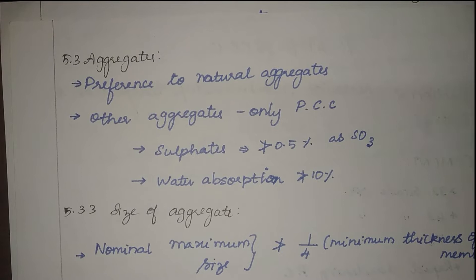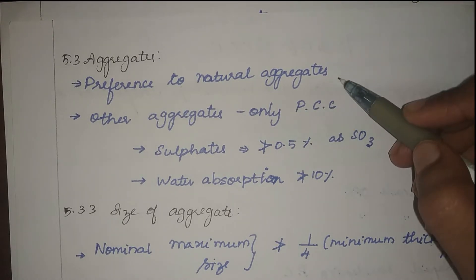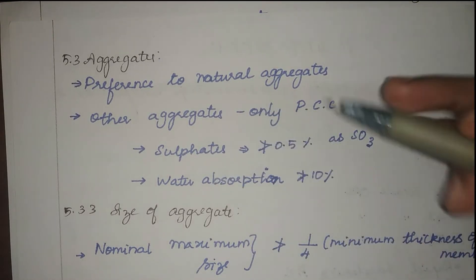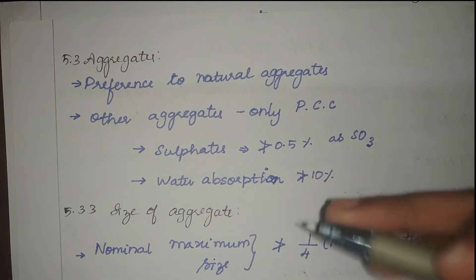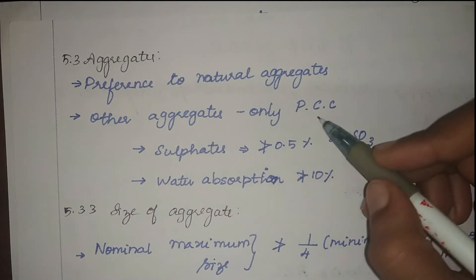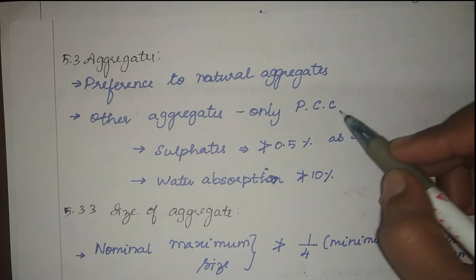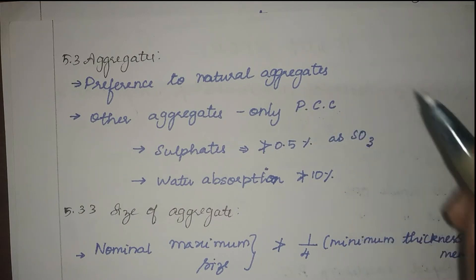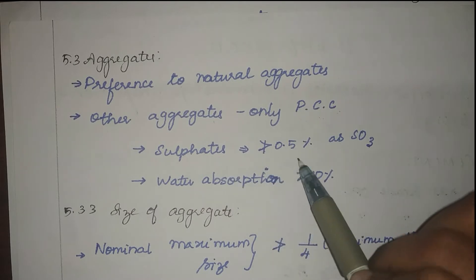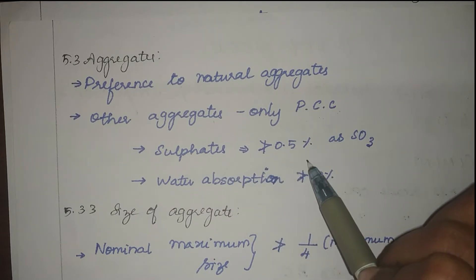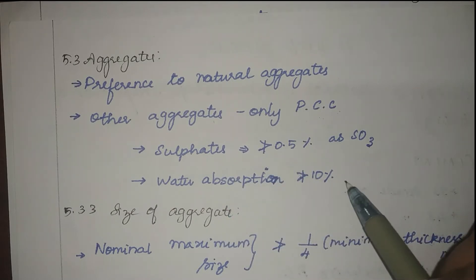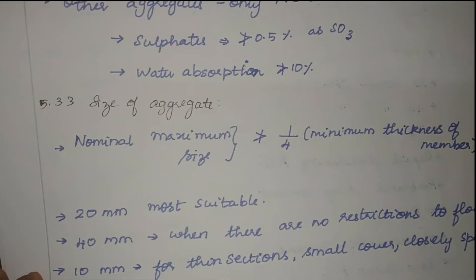The next type of material is aggregates. Preference is given to natural aggregates. If we use any other aggregate, it must be used only for PCC — plain cement concrete — and we have to make sure that sulfates are not greater than 0.5% and water absorption is not greater than 10%.